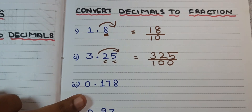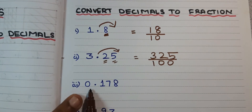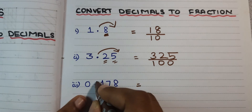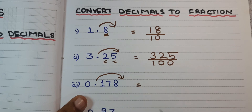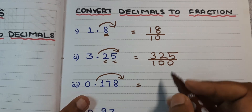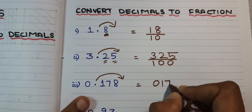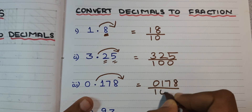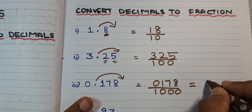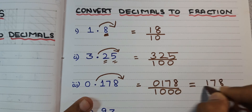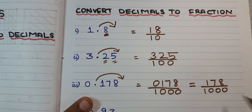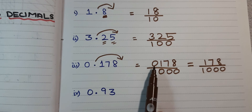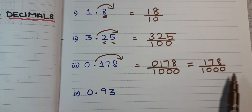Next problem: 0.178. The decimal point is placed after three digits, so it becomes 178 divided by 1000. Three digits means three zeros. Since zero has no value, I have written the numerator in simple form as 178.